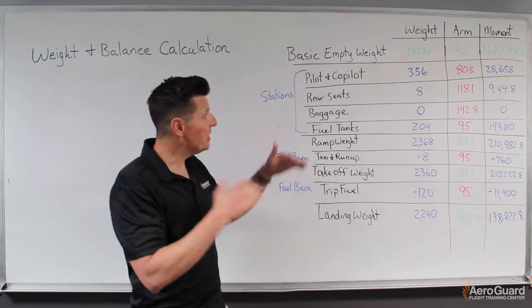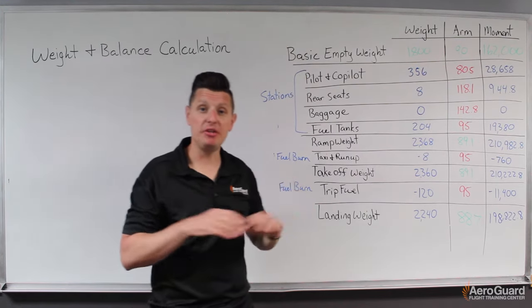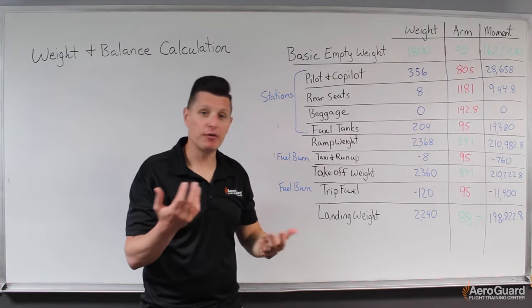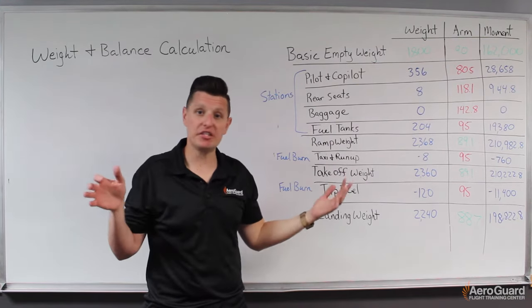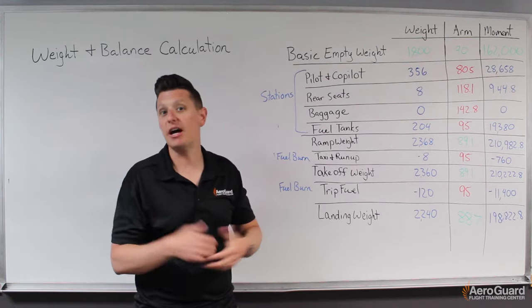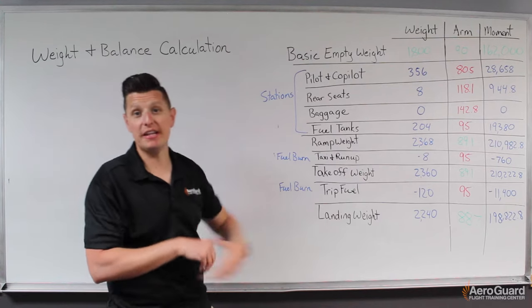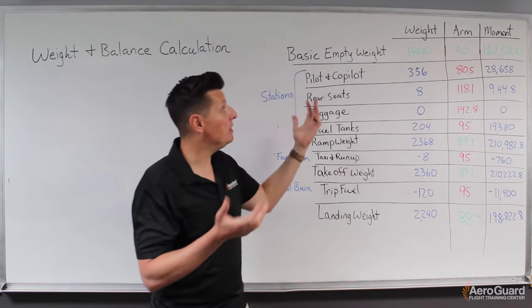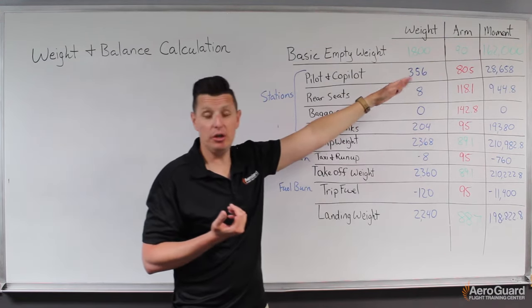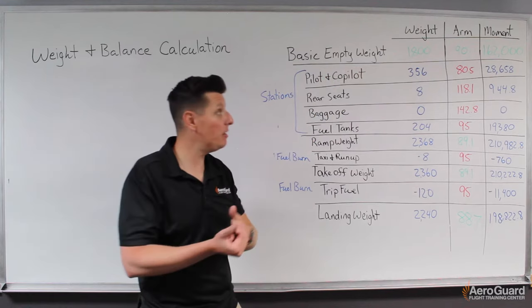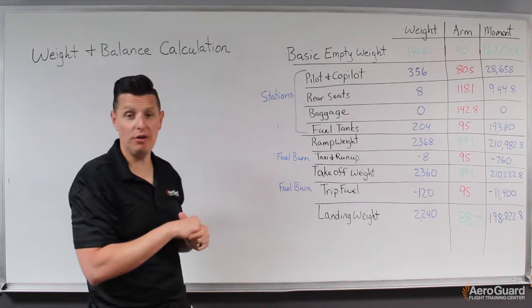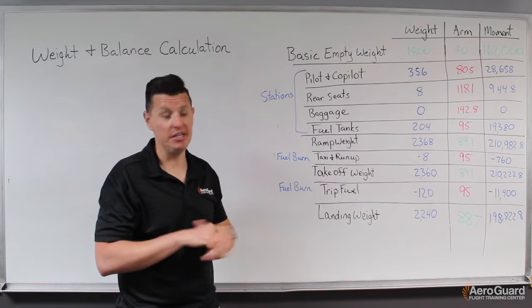We're going to use this to calculate both our weight and the location of the center of gravity. We start with just the airplane empty by itself, which we call the basic empty weight. This refers to the aircraft with all its components and normal operating fluids, unusable fuel. In today's case, our aircraft weighs 1,800 pounds, with a CG location at 90 inches from the datum, giving us a moment of 162,000.